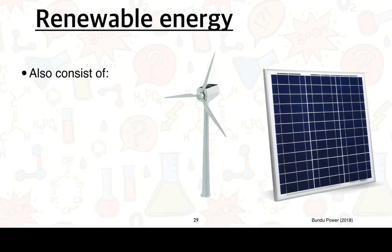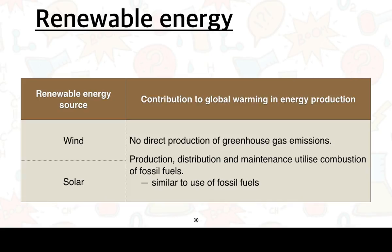For renewable energy — specifically wind and solar, as specified — there is essentially no direct production of greenhouse gas emissions, since they use wind or sunlight to generate electricity. However, in order to produce wind turbines or solar panels, it is likely that fossil fuels are still required for their production, distribution, and maintenance, which does contribute to global warming and the enhanced greenhouse effect.